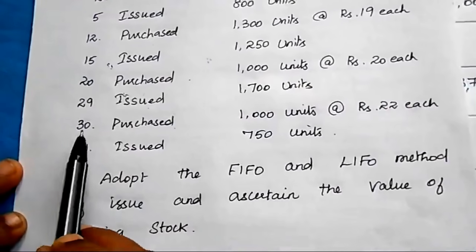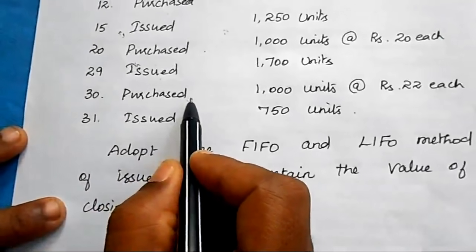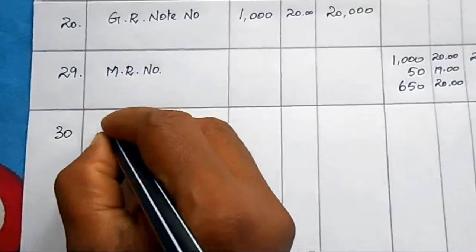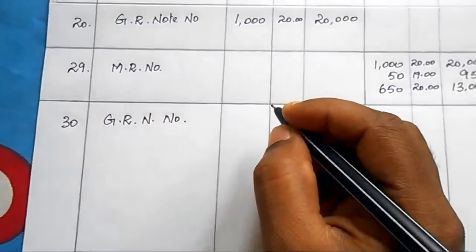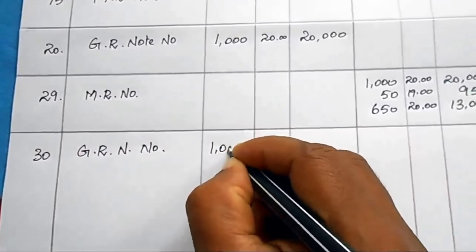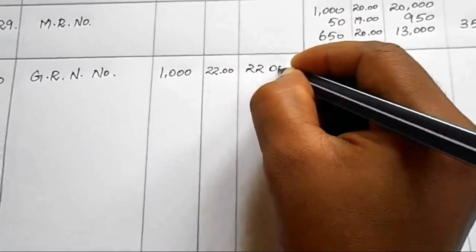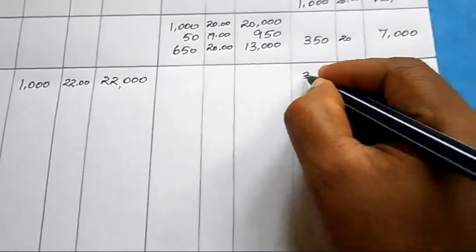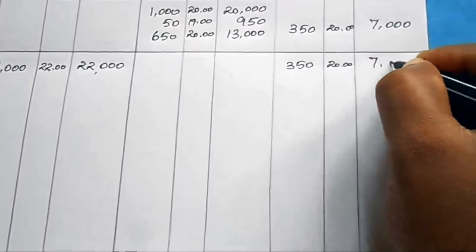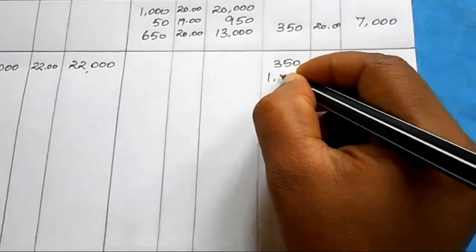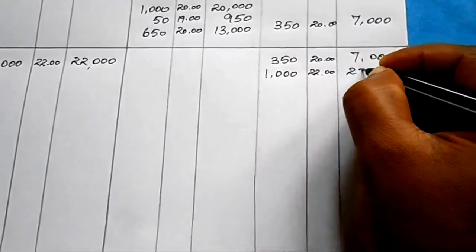On 30th May, purchased 1000 units at ₹22 each. Enter in the receipt column with the Goods Received Note number. Amount: 1000 × 22 = ₹22,000. Update balance: 350 units at ₹20 = ₹7,000, plus new 1000 units at ₹22 = ₹22,000. Total: 1350 units in two lots.